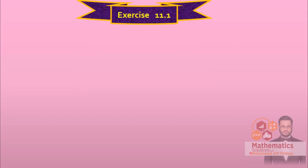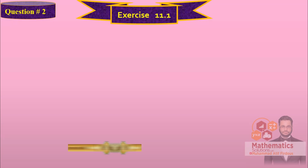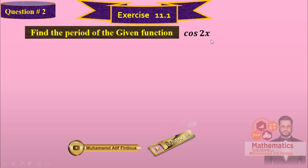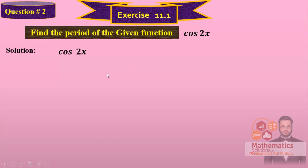Now let's go to the questions of exercise. So we have to find the period of the given function, which is cos(2x). We have to find the period of cos(2x). First, I am going to set a pattern. Period of cosine is 2 pi.